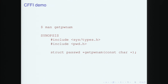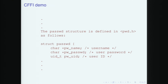Here is a demo. Let's say you want to call the function getpwnam from any POSIX system. You first do 'man getpwnam', see the man page, which tells you what includes you need, and gives you the function signature: getpwnam takes a char* argument and returns a struct passwd*. A bit later in the man page, the struct passwd has fields like pw_name, pw_passwd, pw_uid. The uid is of type uid_t — all fine if you're programming in C, and all a mess if you're programming in Python.